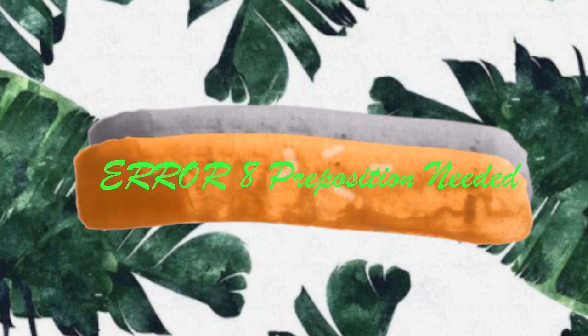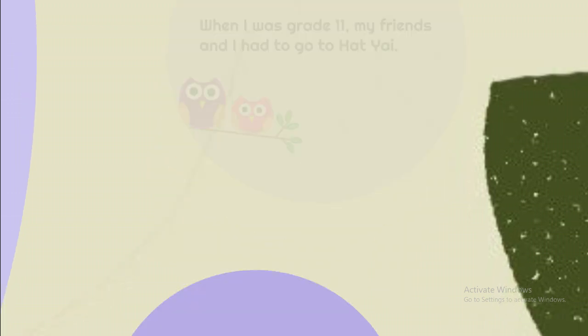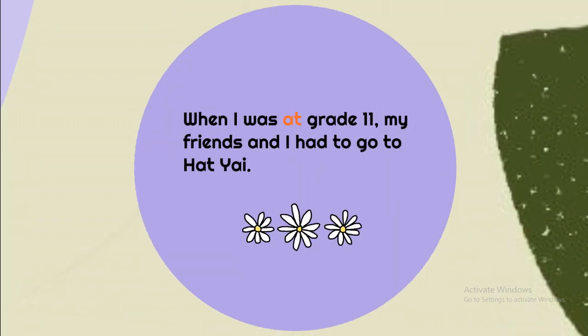Error 8: Preposition. Example: 'When it was grade 11, my friends and I had to go to Hat Yai.' There is a mistake in the first clause — there is no preposition in front of 'grade 11.' If you say 'when it was grade 11,' that means you are grade 11 itself, not a person. But if you say 'when I was at grade 11,' that means you were studying at that grade. So the correct way is: 'When I was at grade 11.'